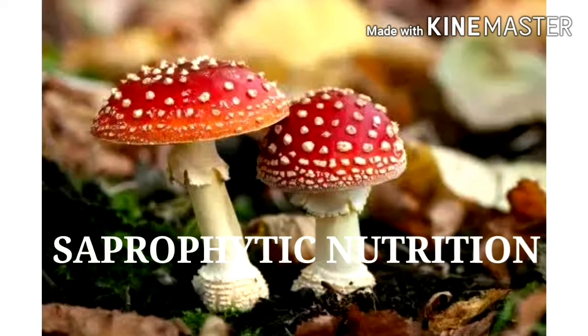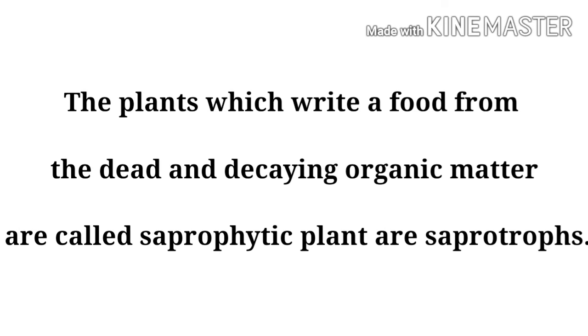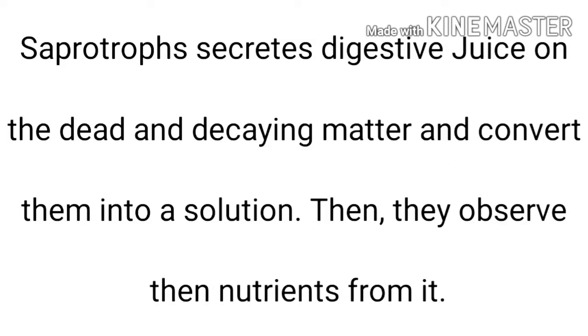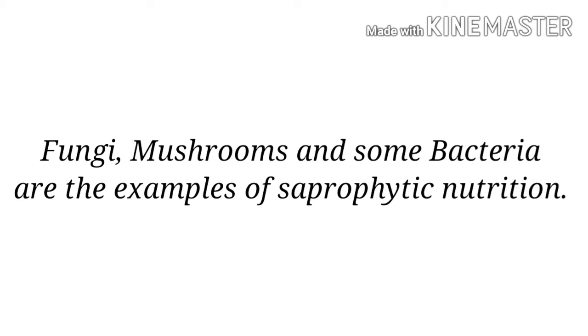The first type is saprophytic nutrition. The organisms dependent on this nutrition are called saprophytes or saprotrophs. Saprotrophs secrete digestive juice on dead and decaying matter and convert them into a solution, then absorb the nutrients from it. Plants such as fungi, mushroom, and some bacteria are saprophytic because they derive their food from dead and decaying organic matter.